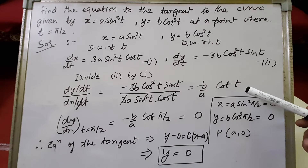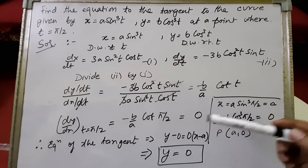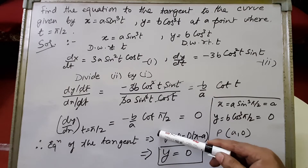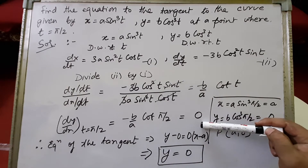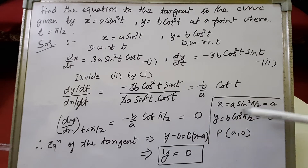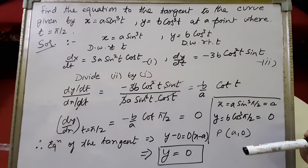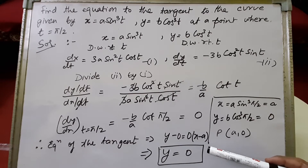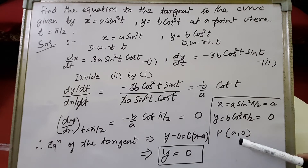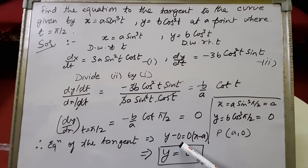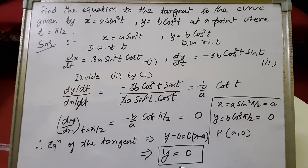We have to find the value of the derivative at t equals pi by 2. When we put t equals pi by 2 here, the value of cot(pi/2) is 0, so 0 times anything is 0. Therefore the slope of the tangent is 0, and the point is (a, 0). The equation of the tangent is y minus y1 equals m times (x minus x1), with m equals 0, x1 equals a, y1 equals 0. This gives y minus 0 equals 0, so the equation of the tangent is y equals 0, which is the x-axis.